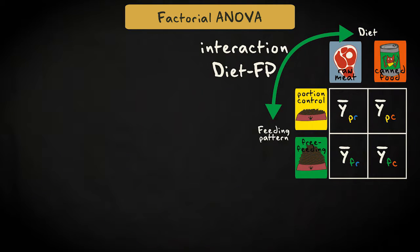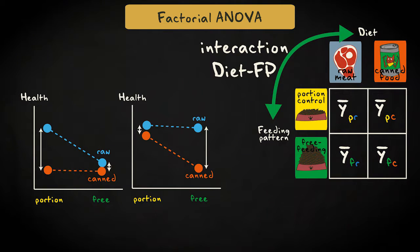Finally, we can check for an interaction effect. We can see if the effect of one factor influences the effect of the other factor. For example, if portion control strengthens a positive effect of a raw meat diet. Another example could be that canned food negatively affects health, but only if cats are free-fed.